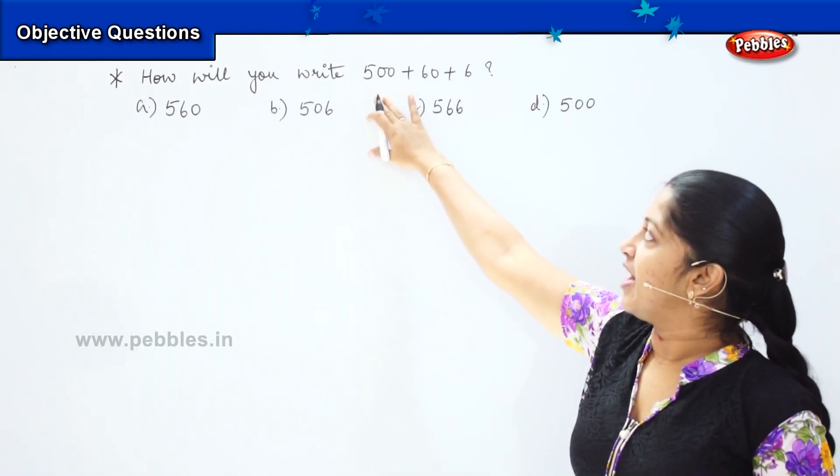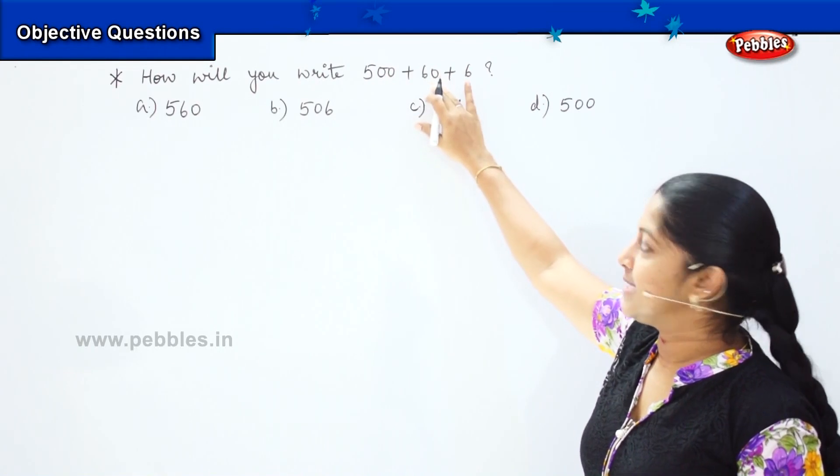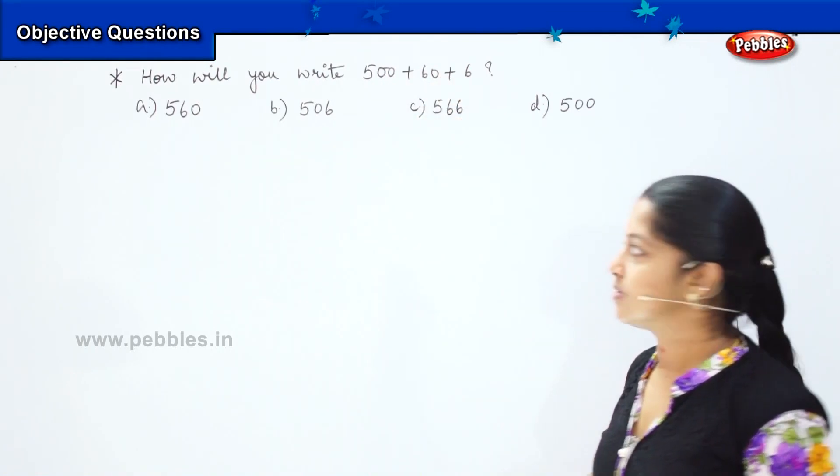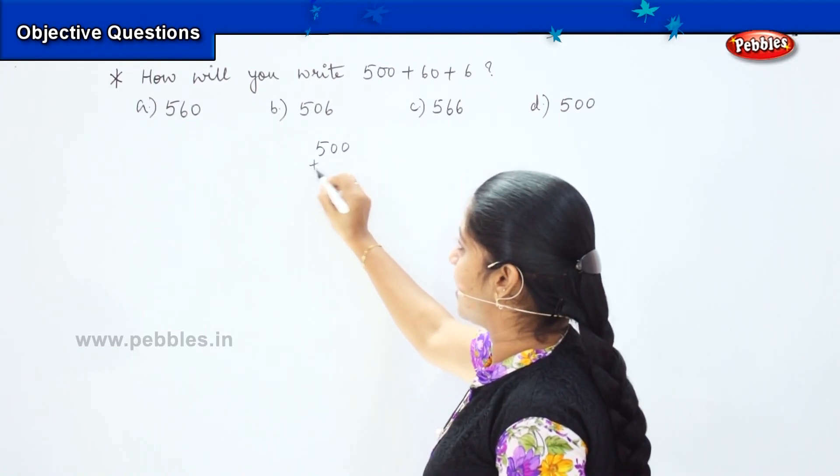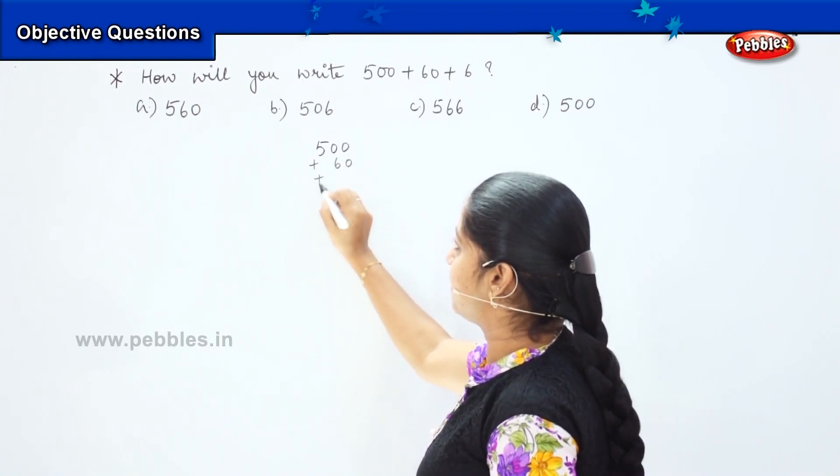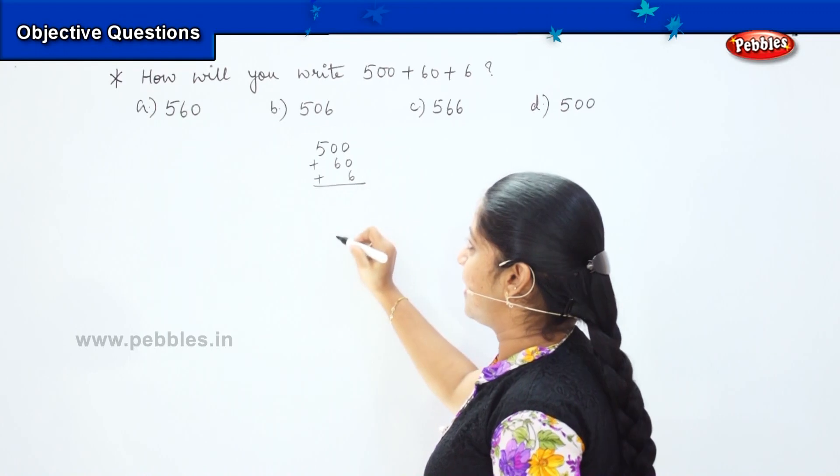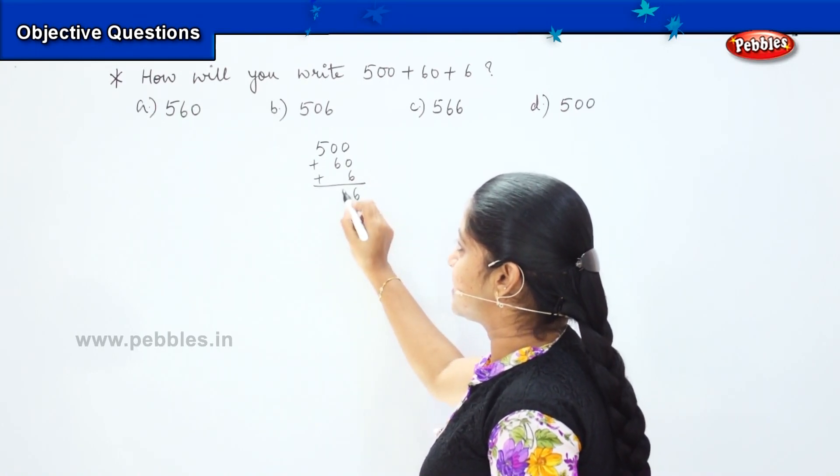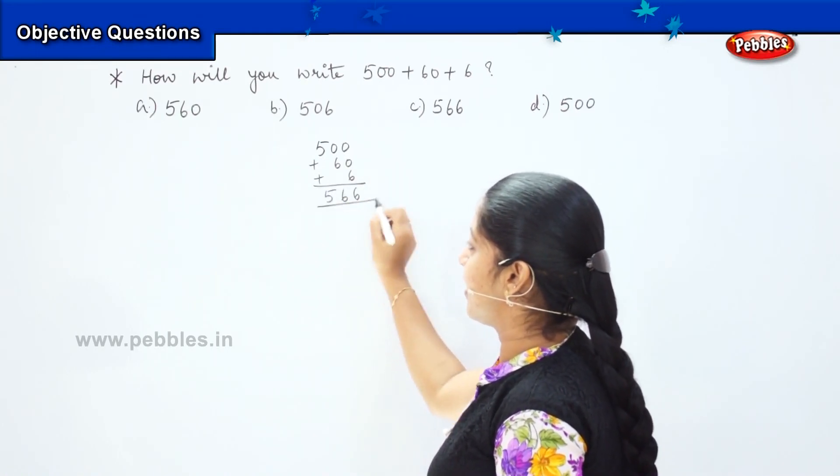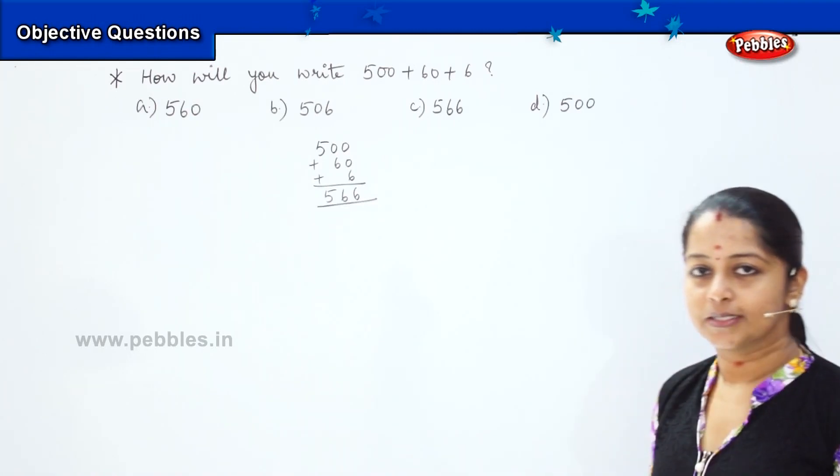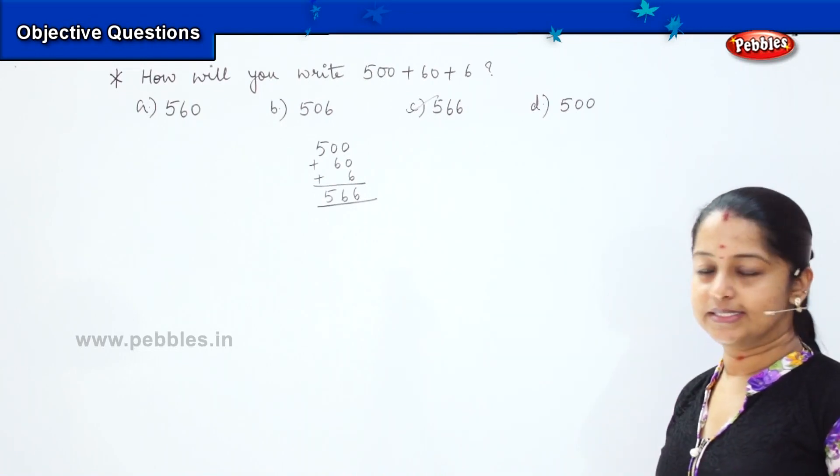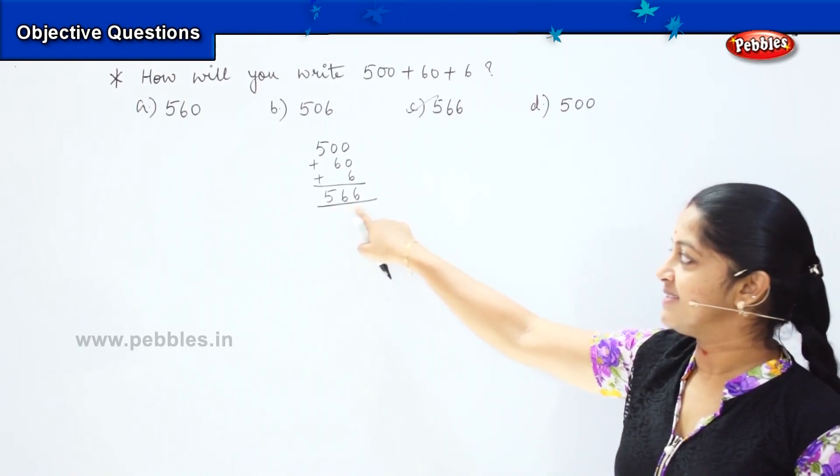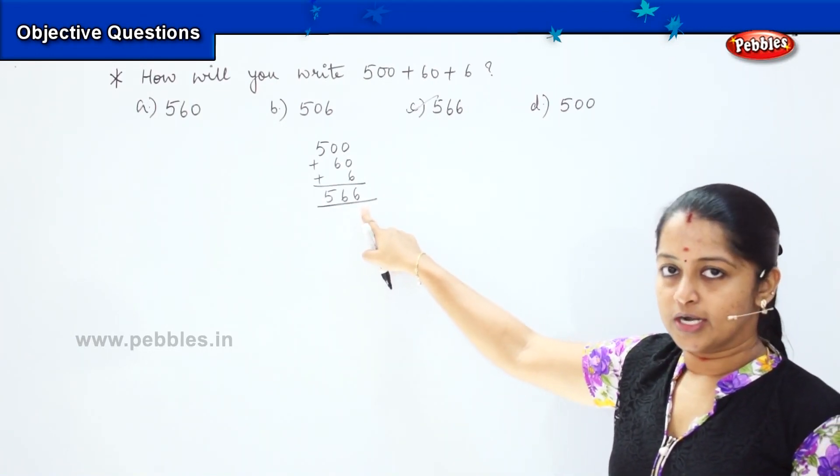So here it is asking me 500 plus 60 plus 6. So how will you write here? 500 plus 60 plus 6. So it will come here 6, 6, 5. So what is my answer? Good! Option C is my right answer because my answer is 566, got it?